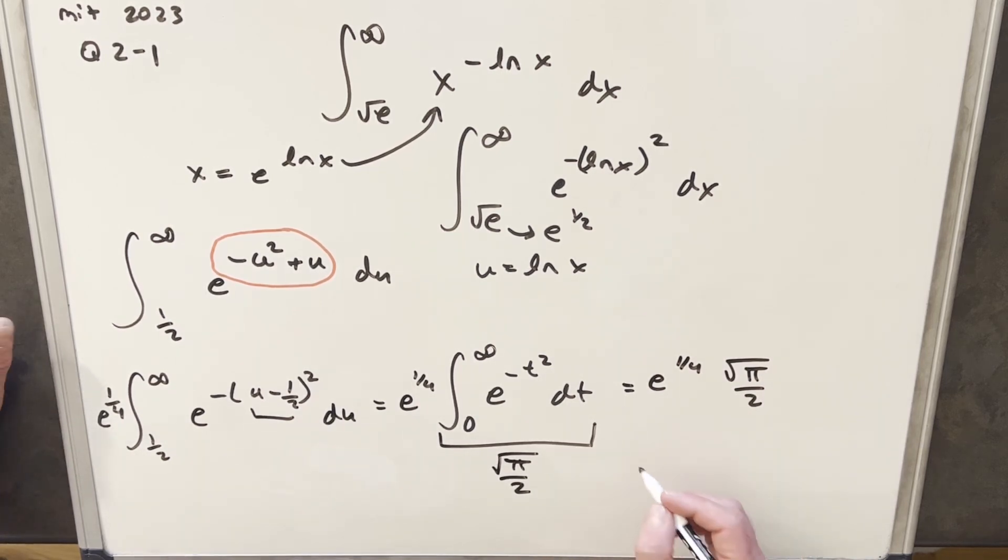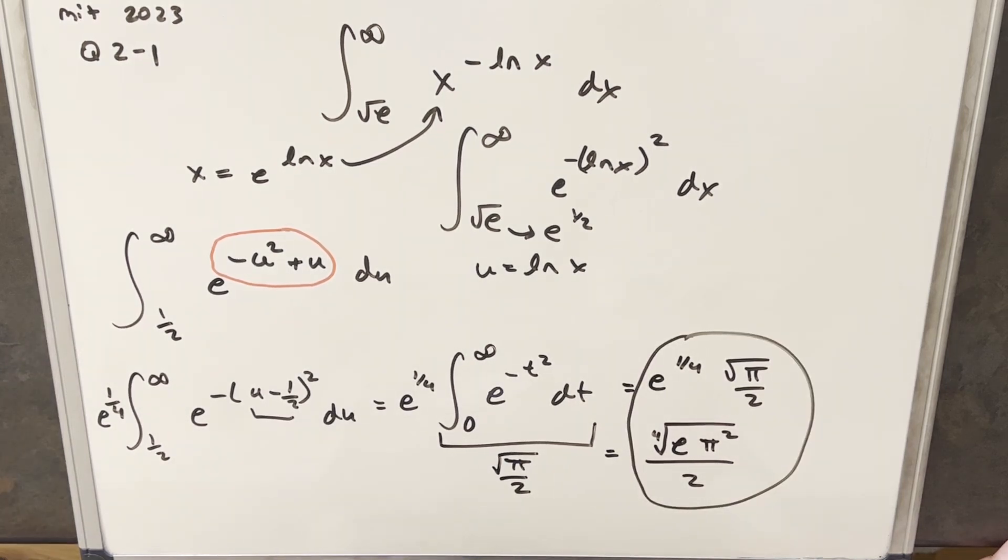In the answer key, they wrote this a little differently. I don't know. I kind of like it this way, but the way they do it is they write this as a fourth root e pi squared all over 2. Anyway, I thought it was a great problem today, so we'll stop it there. Thanks to everyone for watching. Have a great day.